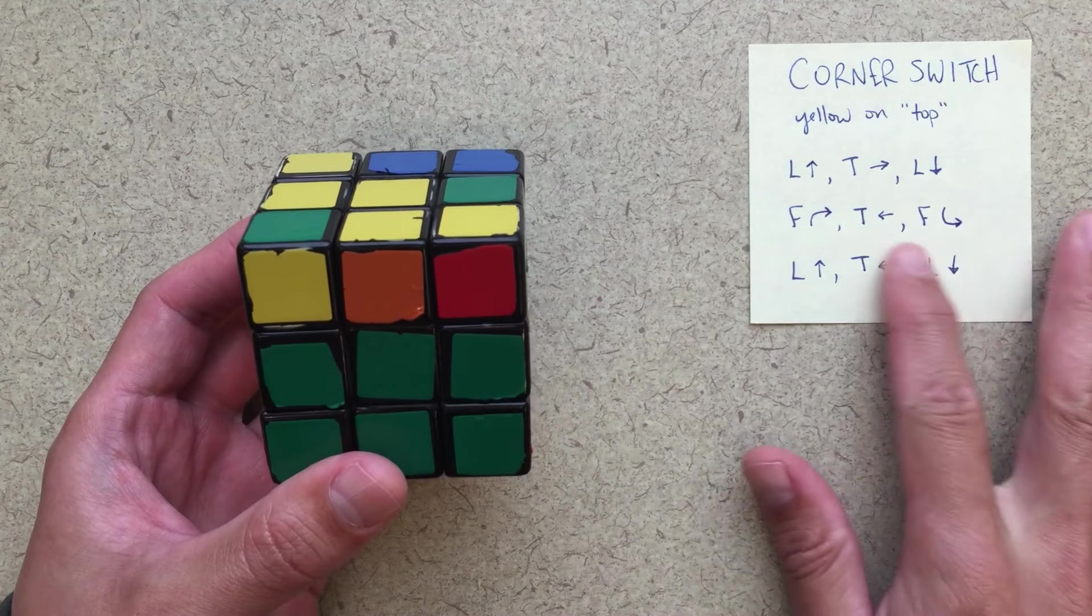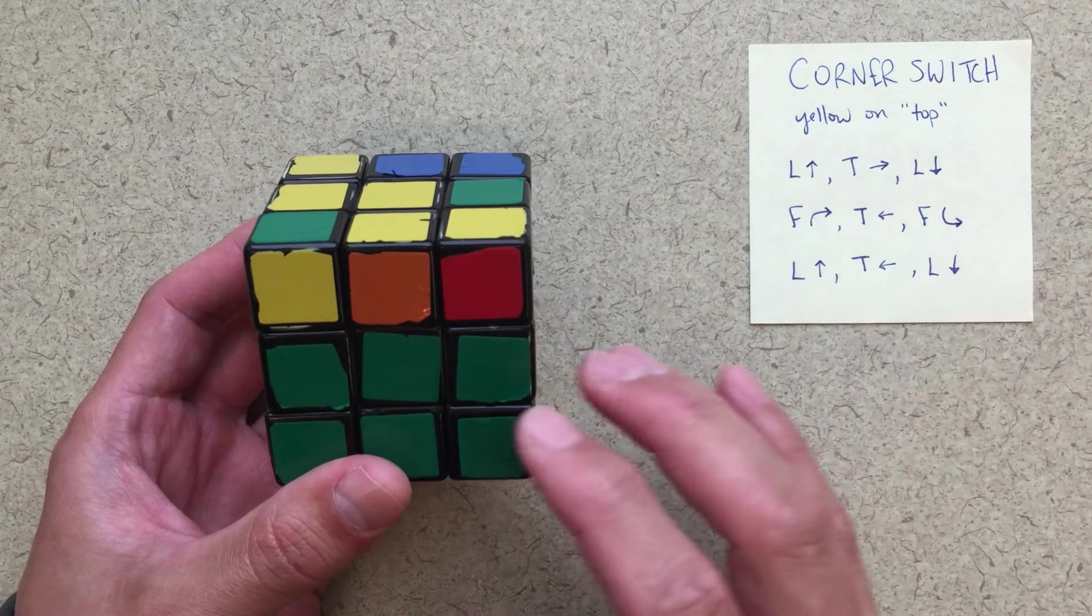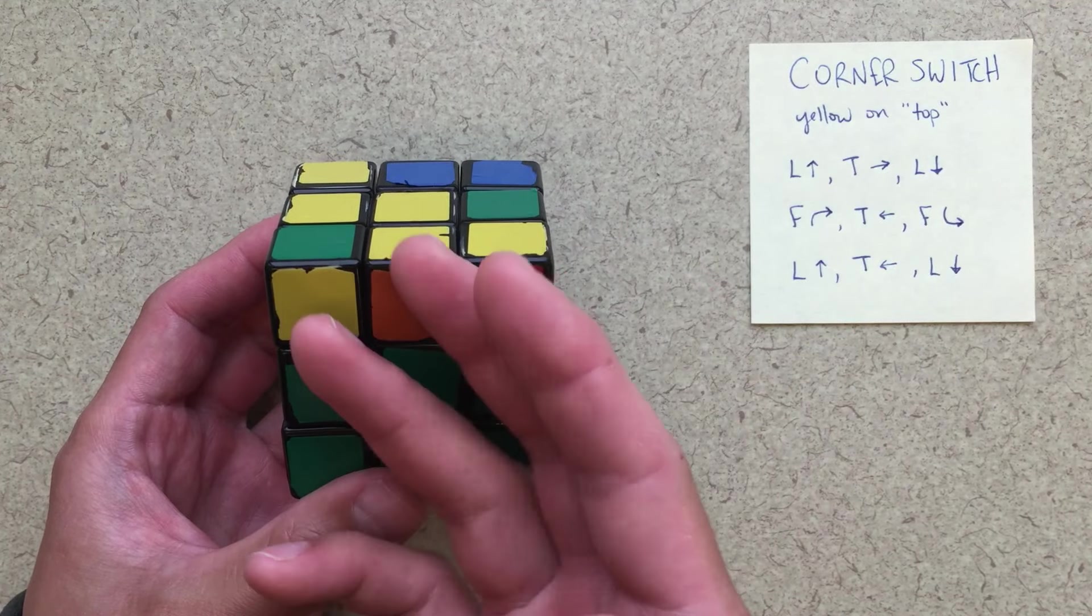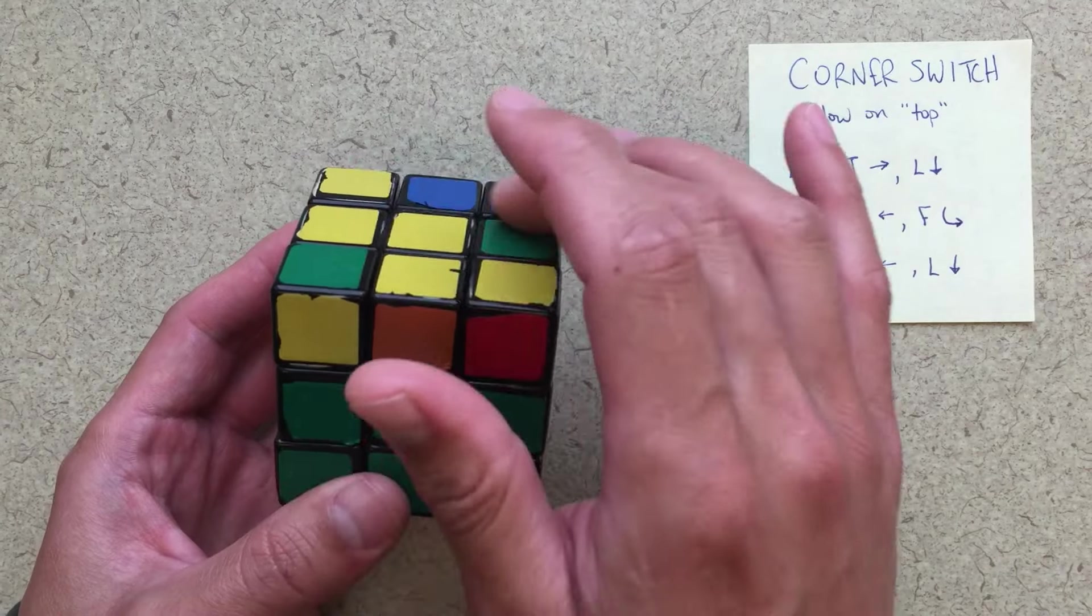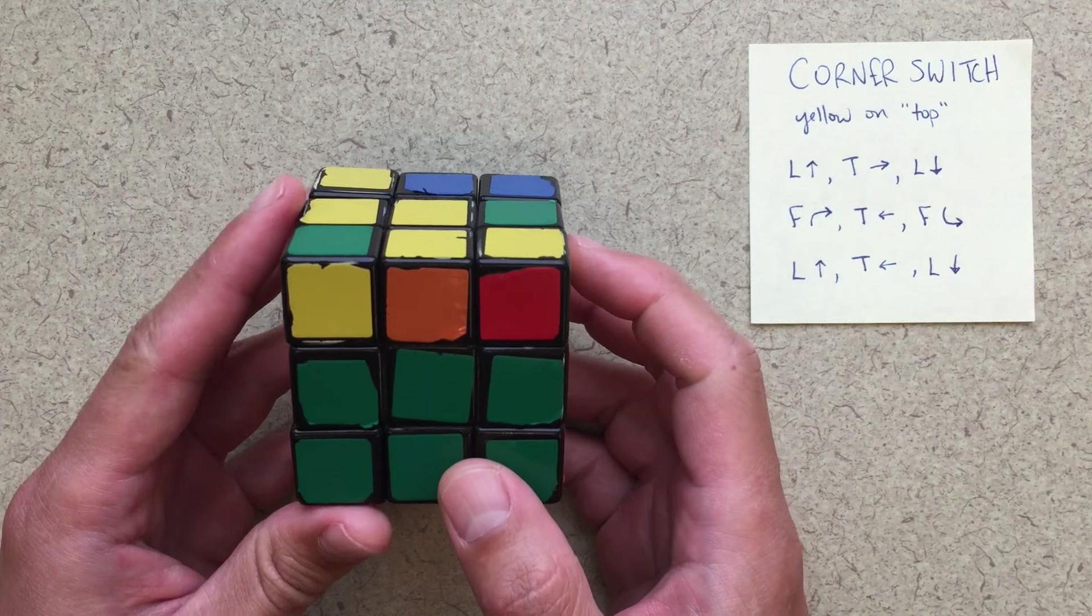I'm going to be looking at the two pieces that I want to switch. So these are the two pieces that I want to switch. And then I'm just going to go through this algorithm. This algorithm is going to switch these two pieces and not mess up anything else on the bottom two layers. Some other stuff will happen up here. Again, we don't really care about that at this point in time.